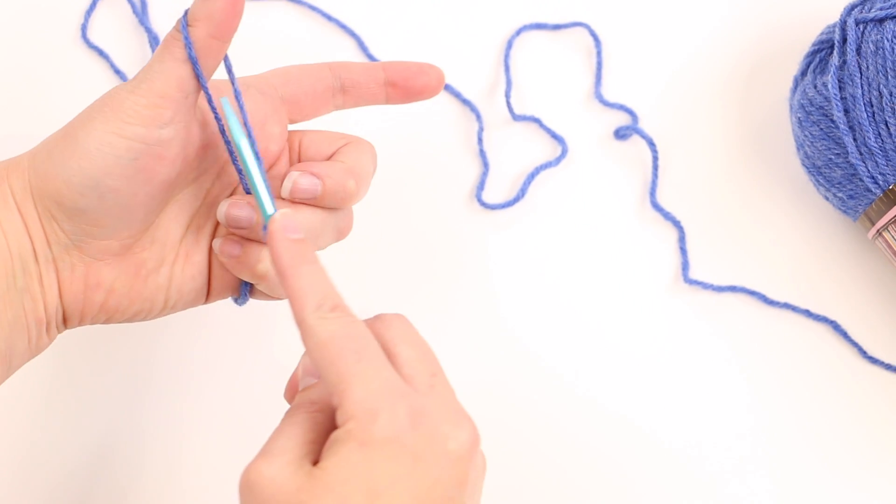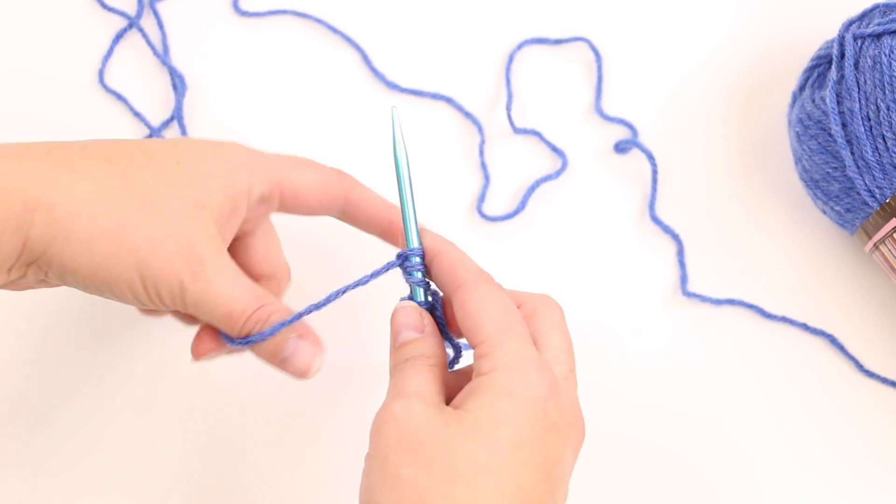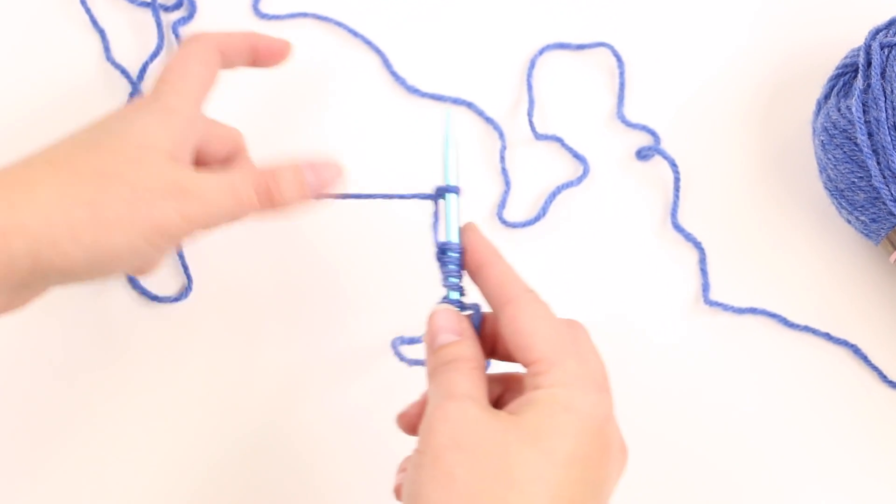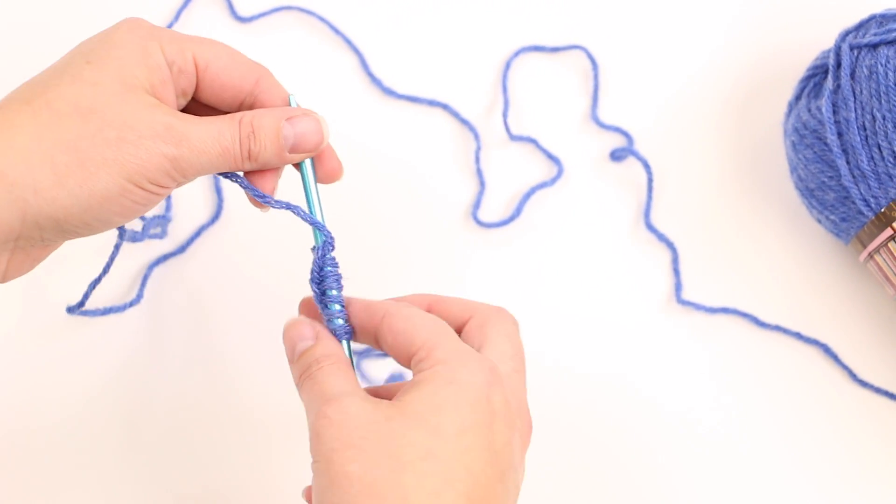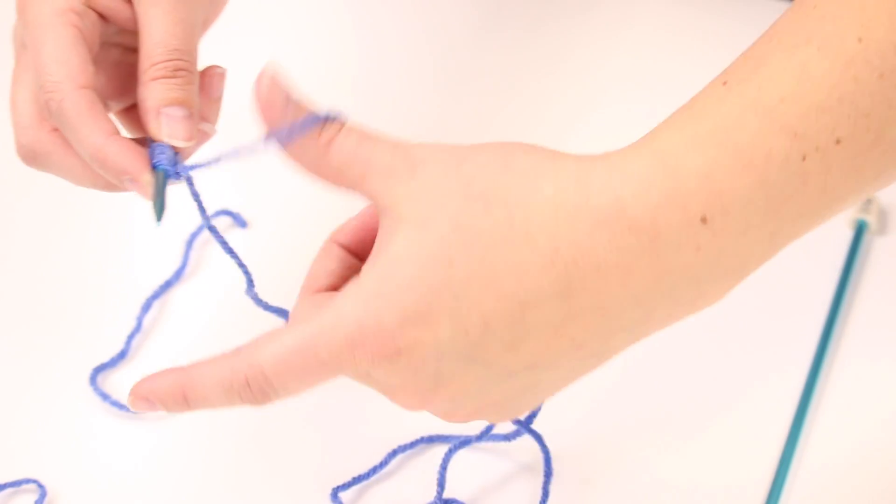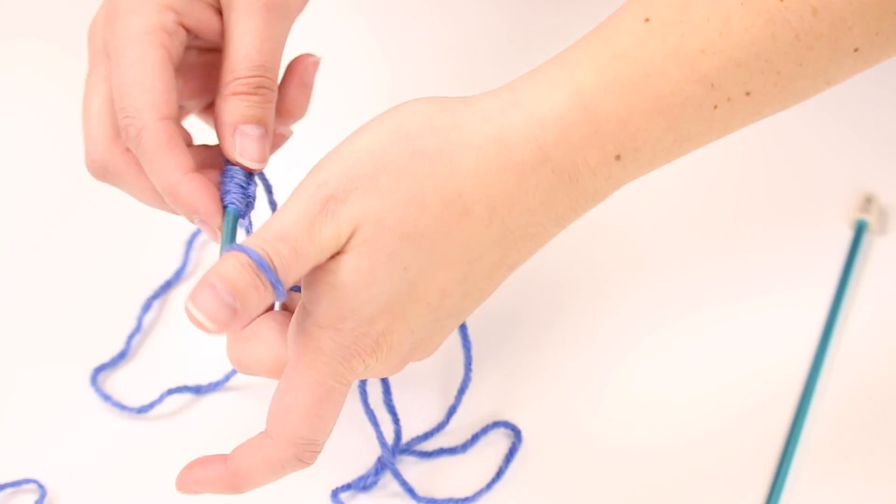So make a loop, go through the hole, pull it down. This is our very basic cast on here. And you're just going to repeat this as many times as your pattern says to cast on. If your pattern doesn't give you a particular method to cast on, this tends to be my go-to. It gives a very nice simple edge.